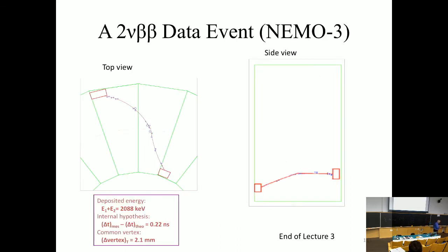This is how these events look in the NEMO3 detector — about half a meter across. There is a tracking chamber with Geiger wires operating in Geiger mode, and a scintillator calorimeter. You see two electrons coming out; this is an event display of a two-neutrino double beta decay event.